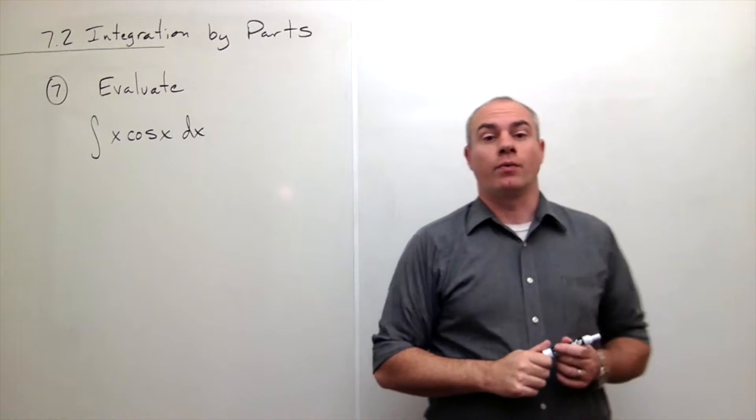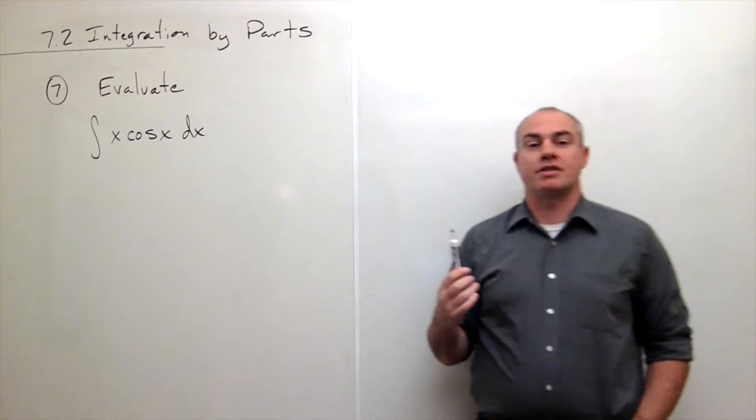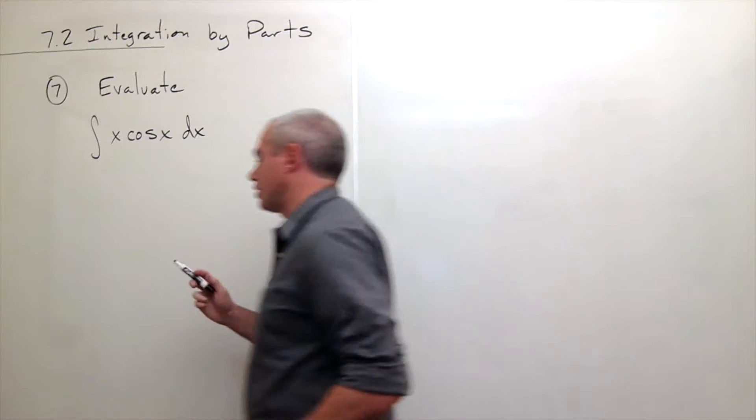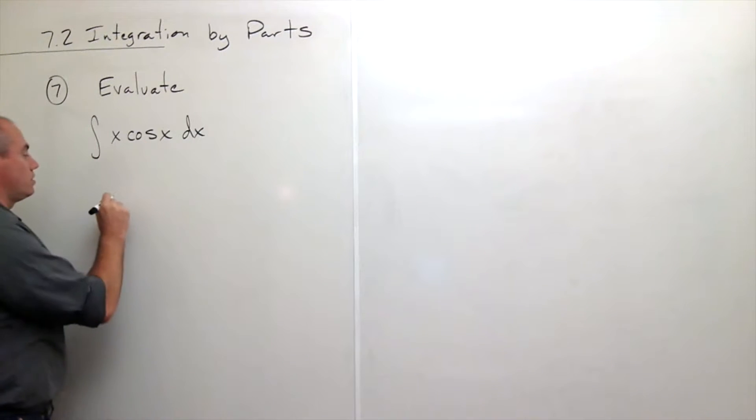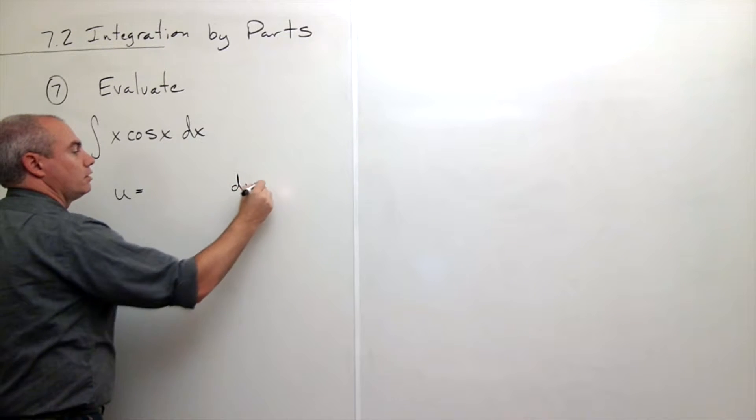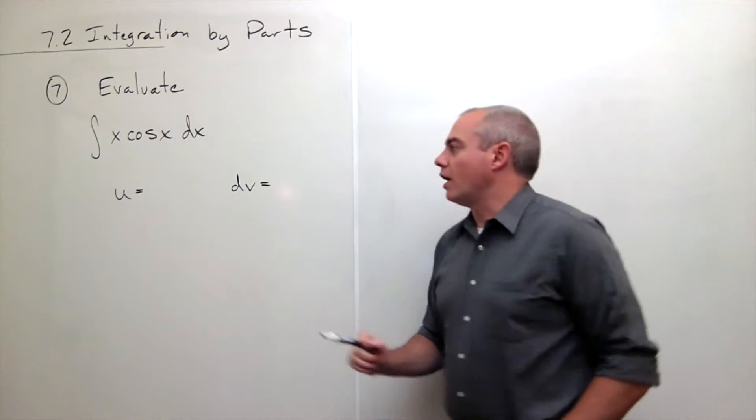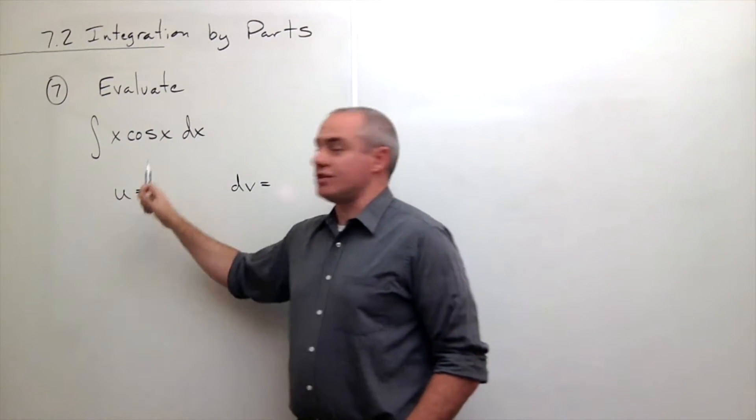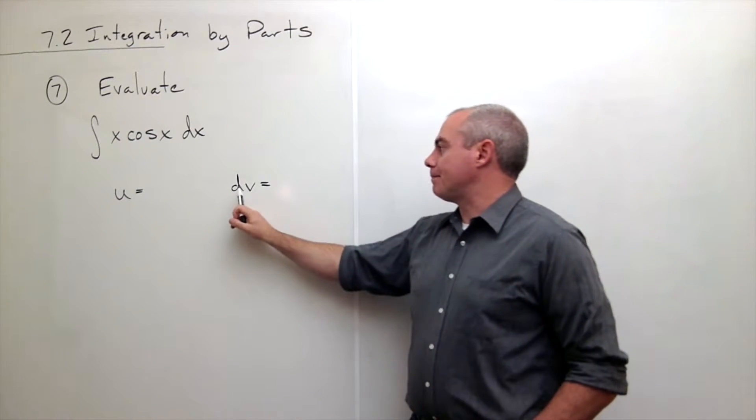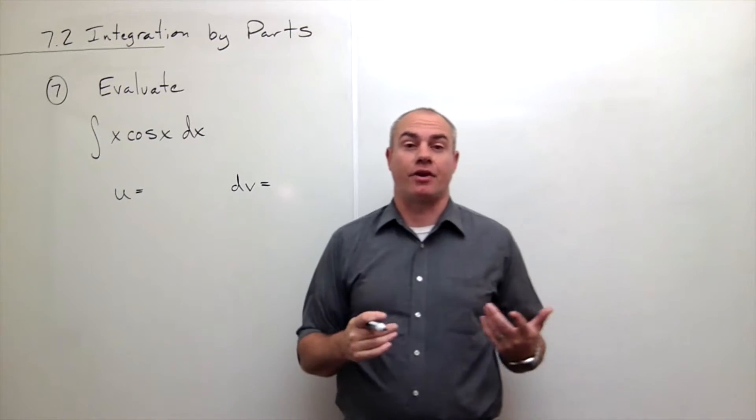Now when I use integration by parts on an integral, what I'm looking to do is break it into two pieces. I'm looking to break it into a piece that we're going to call u, and another piece that I'm going to call dv. What I want out of my piece u is something I know how to take its derivative. What I want out of my piece dv is something I know how to take its antiderivative.